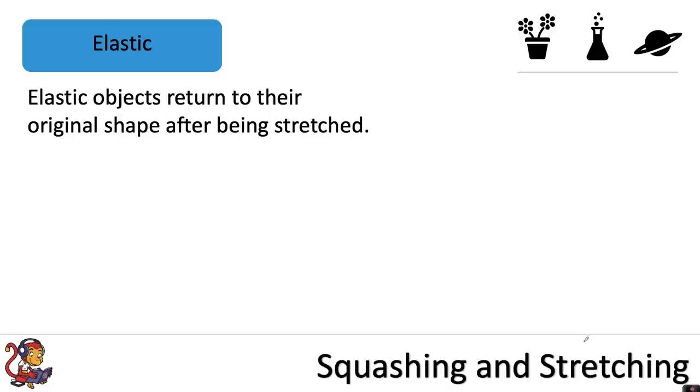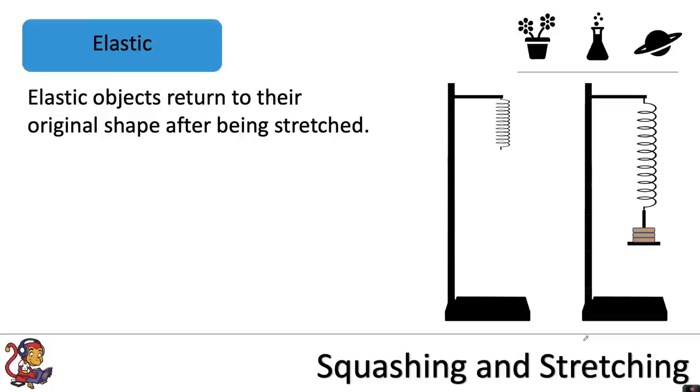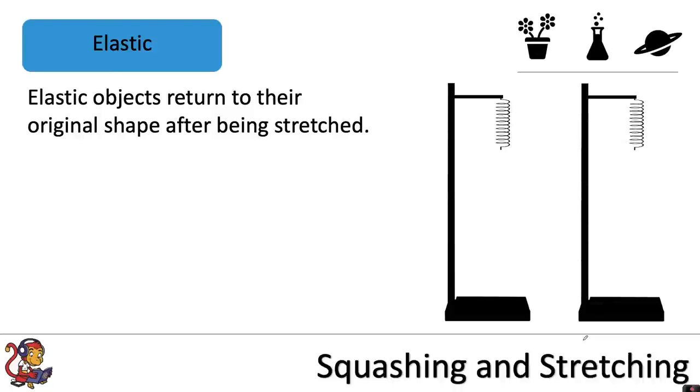Elastic objects return to their original shape after being stretched. So for example, with this spring, if we were to apply masses to the end of the spring and stretch it, the spring would be considered elastic if once you remove that pull force that's stretching the spring, it would return to its original shape.